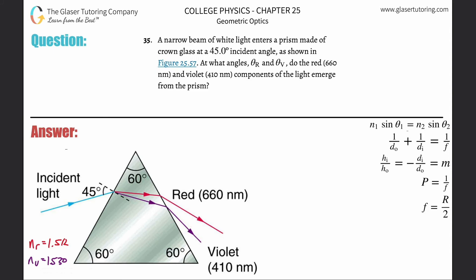Problem 35: a narrow beam of white light enters a prism made of crown glass at a 45-degree incident angle as shown in the figure. At what angles theta sub r and theta sub v do the red and violet components of the light emerge from the prism?